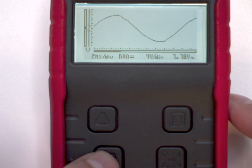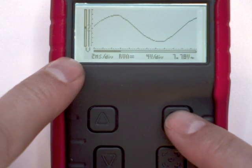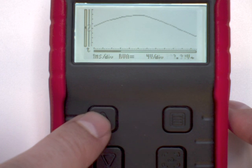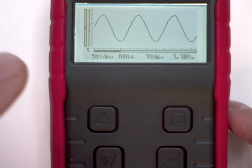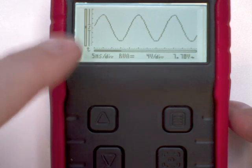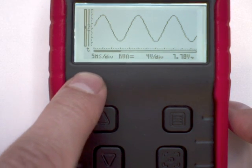I can do the same for time per division. So I select time per division, and now again with the arrow keys I can stretch or compress the waveform so we get more waveforms, more periods on the screen.